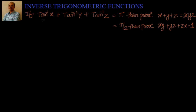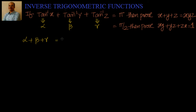First step, we will take it as angle. We will say tan inverse x equal to alpha, tan inverse y equal to beta, and tan inverse z equal to gamma. So we know alpha plus beta plus gamma equal to pi.